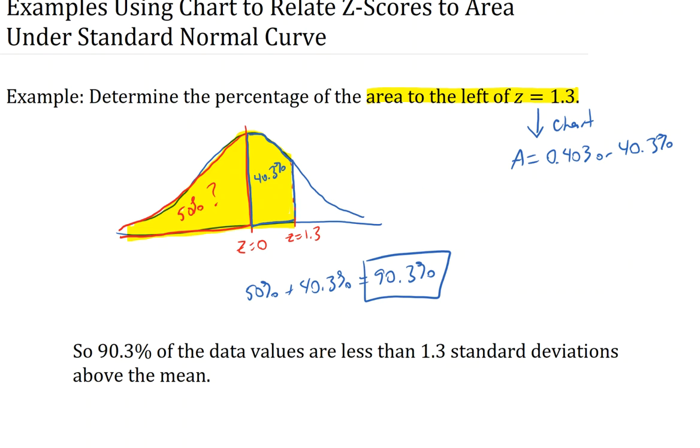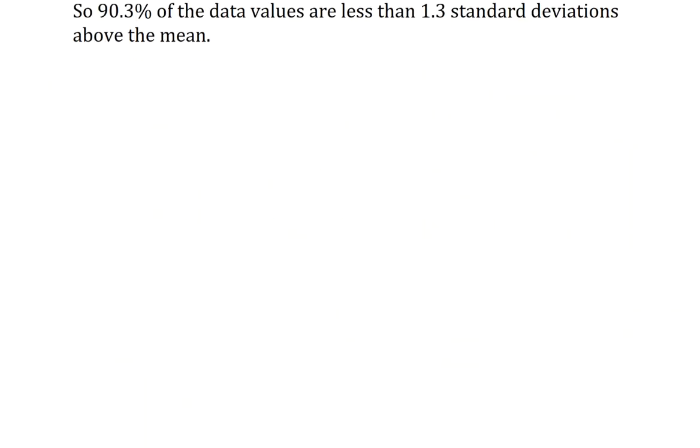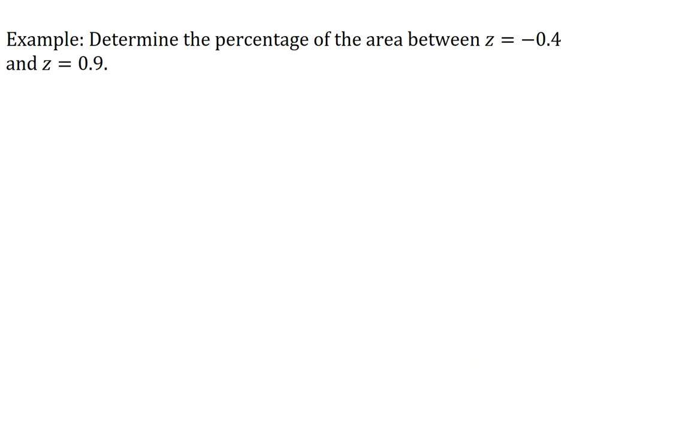Let's see another example. Now we want the percentage of the area between z equals negative 0.4 and positive 0.9. So let's locate z equals 0 right in the middle. And I apologize for the poor pictures here, but I hope they help you visually understand what's happening. z equals negative 0.4 is over here, and z equals 0.9, positive 0.9 is over here. And what we want is the percentage of the area between those. So that's the area here shaded across the mean.